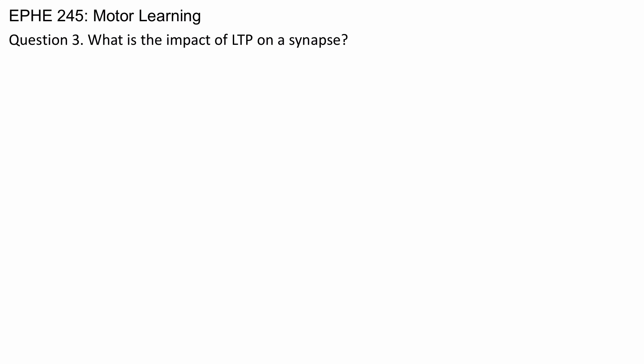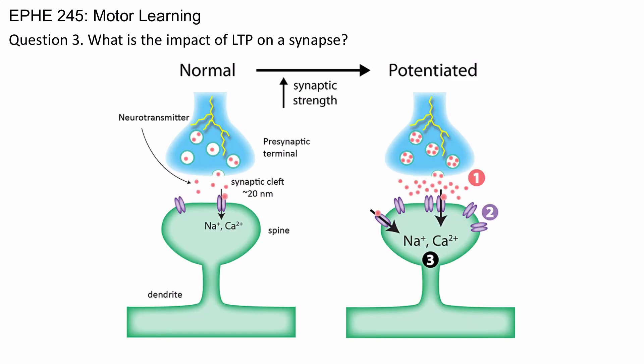What is the impact of long-term potentiation on a synapse? Simply put, long-term potentiation strengthens a synapse. If you look at the diagram here, you'll see on the left a normal synapse prior to potentiation. On the right, you see a potentiated synapse.